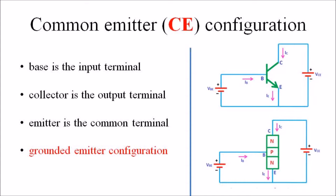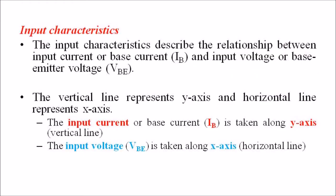Now we are going to discuss the input and output characteristics of CE configuration. The input characteristic describes the relationship between the input current and input voltage — that is, the relationship between the base current IB and the base-emitter voltage VBE. Draw the vertical and horizontal axes: the Y-axis represents the input current IB, and the X-axis represents the input voltage VBE.